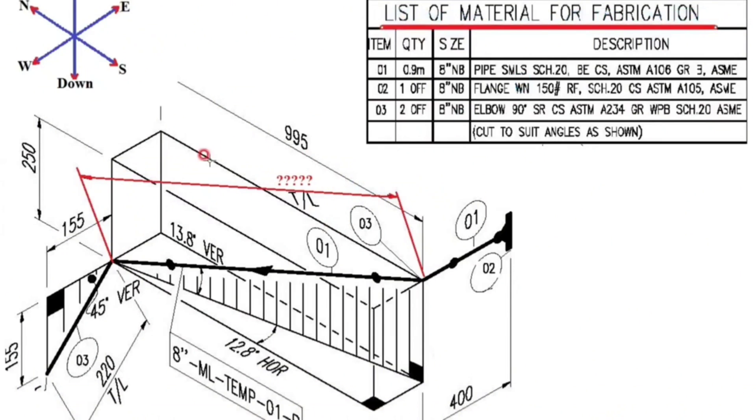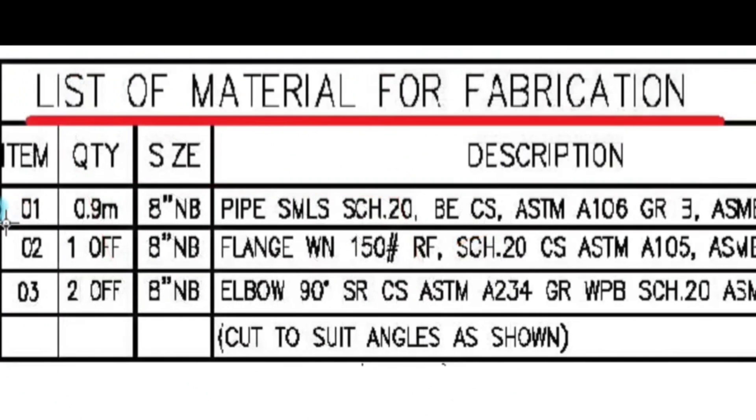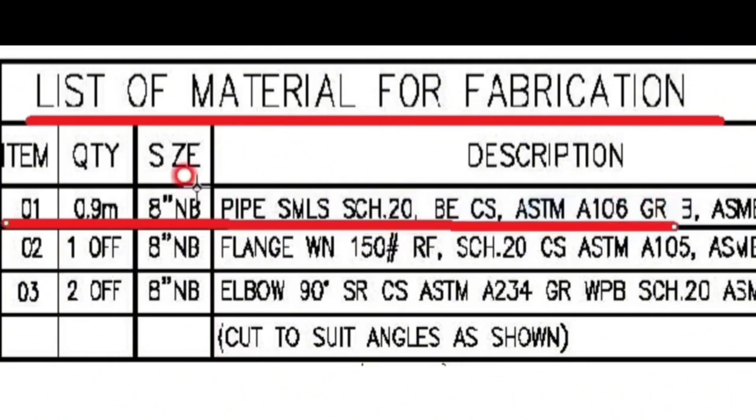Let's study the materials in this pipe isometric. Let's look at detail number 1. Item number 1, the quantity is 0.9 meters, 8 inch pipe SMLS schedule 20, carbon steel, A106.